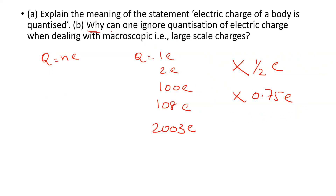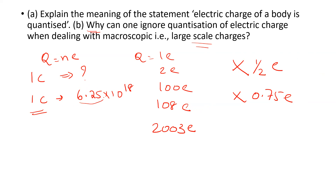Why can one ignore quantization of electric charge when dealing with macroscopic or large-scale charges? One coulomb of charge contains 6.25 × 10¹⁸ electrons — a macroscopic charge. For such large numbers, even if there is a decimal in the electron count, the fractional part becomes negligible compared to 10¹⁸, so quantization can effectively be ignored.